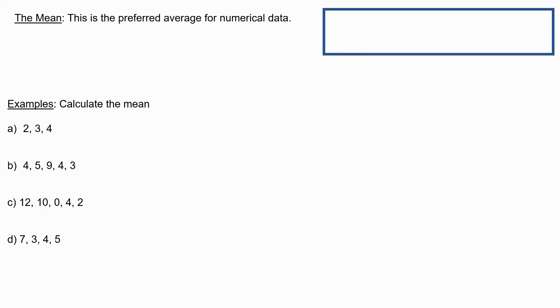So, we also like to work out something called the mean, and this is the preferred average for numerical data. And to work out the mean, we add up the values, and we divide by how many values there are.